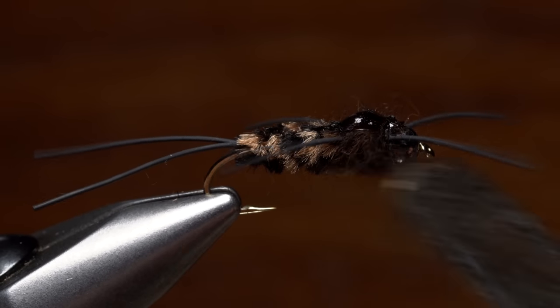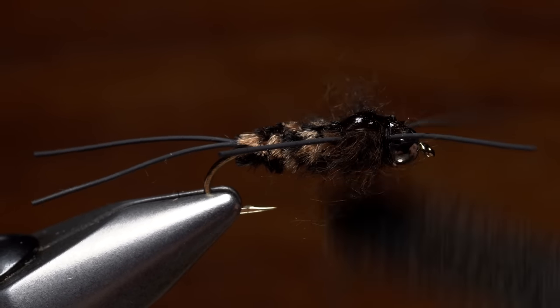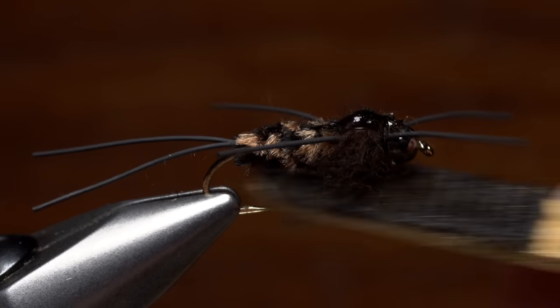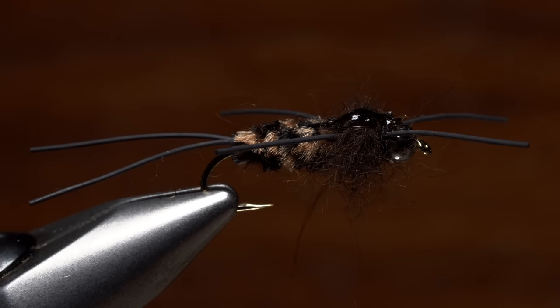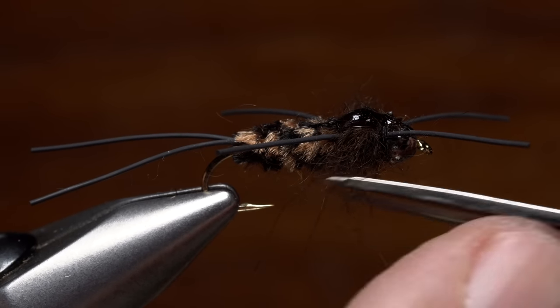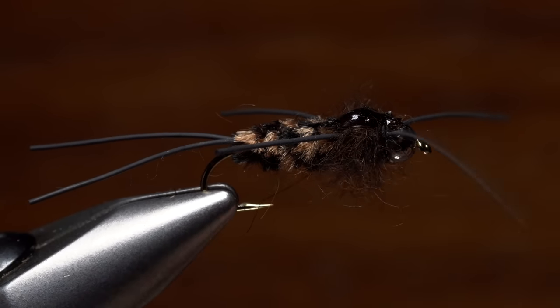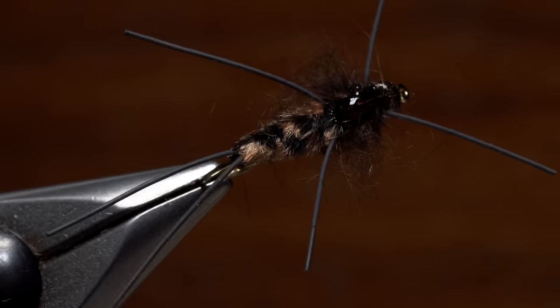Finally, use a little strip of Velcro to brush out the Australian possum. The wilder it looks, the better. If you like, give it a little pruning on the bottom to further enhance the flattened look of the fly. And that's the Pats Plus, super buggy and super effective.